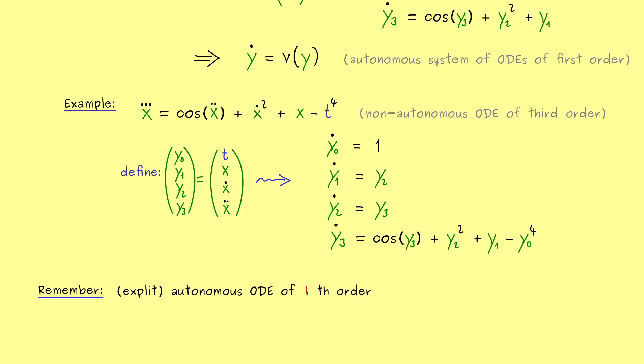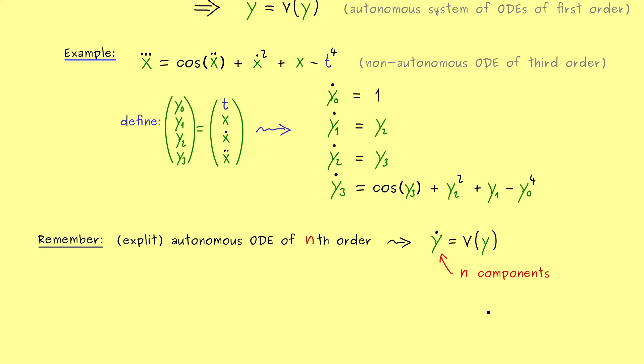Now assume we have an autonomous ODE of nth order. Then we can do the substitution as before and get a system of first order. However now the variable y has n components. So in summary we get an autonomous system of n ODEs of first order.